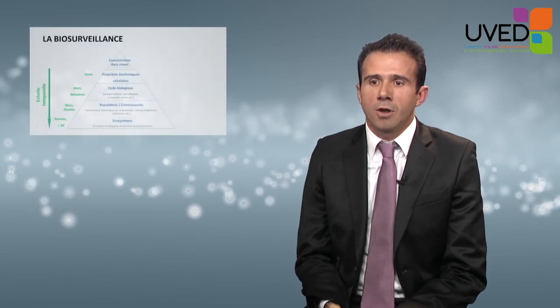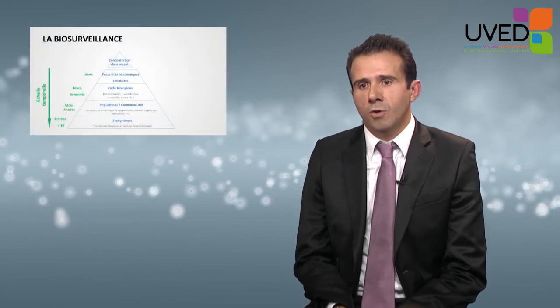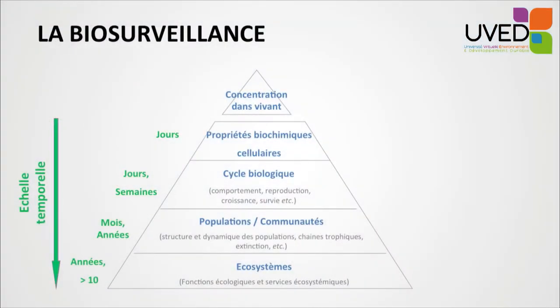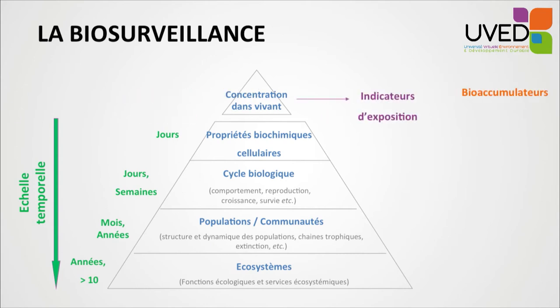All biological levels may provide useful and interesting information in order to make a diagnosis of the environmental health status. The first biological type of response will be the reaction of the living being to a disruption — increased temperature or the presence of a polluting agent. If we are looking at a polluting agent, the first biological response will be absorption of the polluting agent by the organism. We're talking about bioaccumulators.